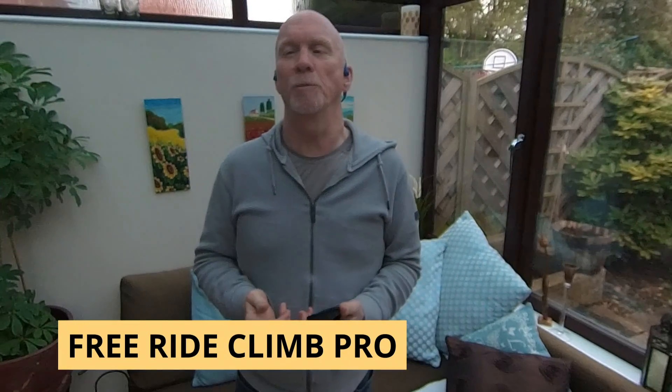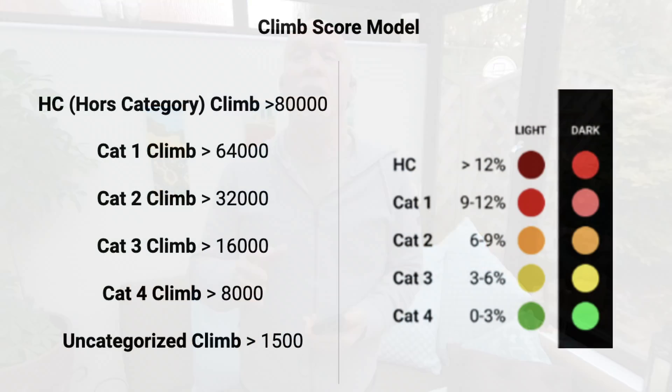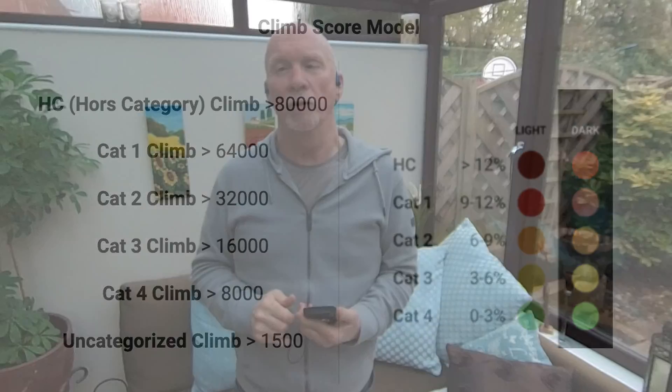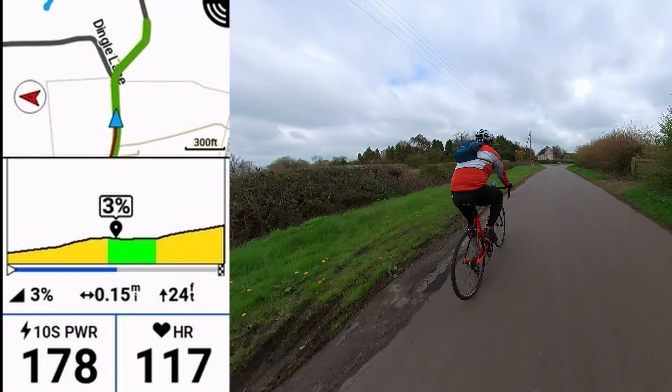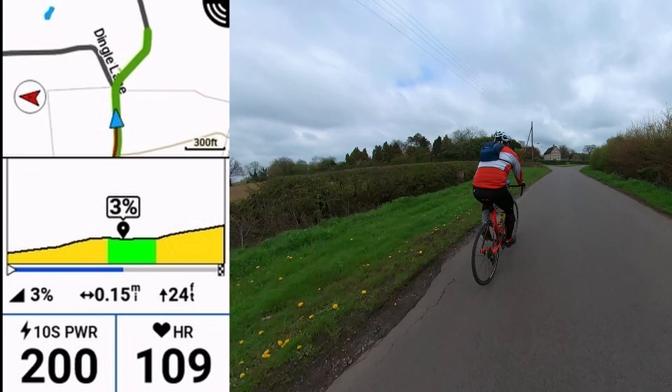When free riding without a loaded course, the map has all of these climbs revealing themselves when you get close to them. They show as a colored line depending on the category of the climb — the colors are the same as used on the elevation graphs on your unit, picking out the variances in gradient: green being the easiest, through yellow, orange, red, and dark red for the hardest climbs of all.